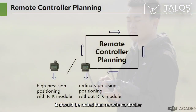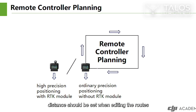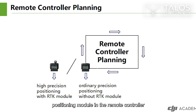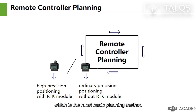It should be noted that remote controller planning uses ordinary satellite positioning accuracy, so a higher retraction distance should be set when editing the routes. When adding an RTK high precision positioning module to the remote controller and based on the premise of a good RTK signal, high precision planning can be achieved. All DJI AGRA models on sale support remote controller planning, which is the most basic planning method.